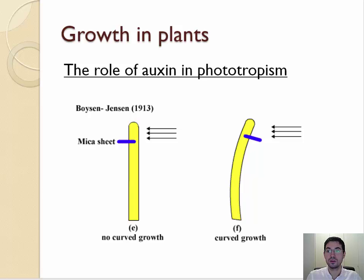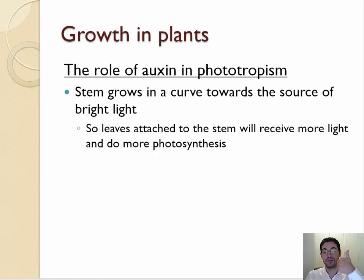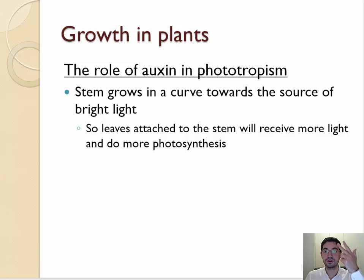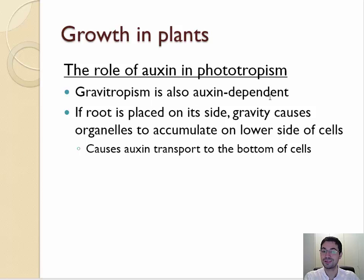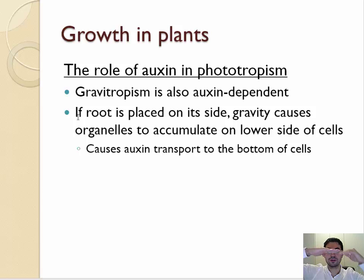You have to know phototropism: auxin is produced in the tip of the plant, light is detected by phototropins, which causes auxin to be pumped from the light side to the dark side. There is a higher concentration of auxin on the dark side, causing increased growth of that side, which causes the plant to grow towards the light — this is called positive phototropism. Gravitropism is also auxin-dependent: if you place a root on its side, gravity causes organelles to accumulate on one side because they sink to the bottom, auxin transport goes to the bottom, causing the root to bend upward, helping leaves and flowers grow more towards the light.